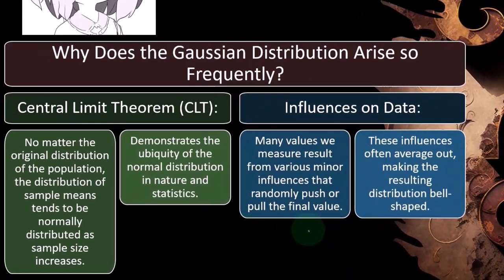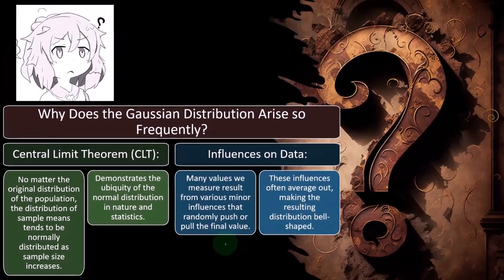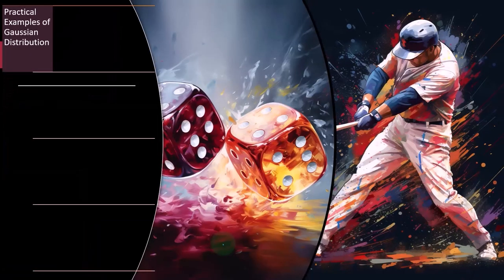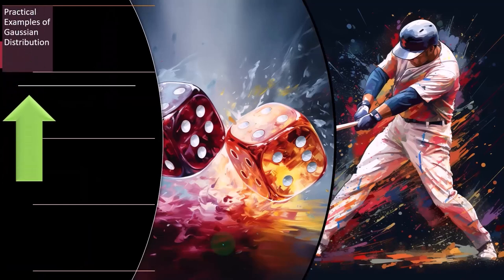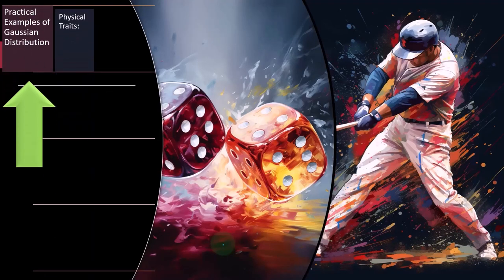So these influences often average out, making the resulting distribution bell-shaped. So let's take a look at some practical examples of the Gaussian distribution, bell-shaped curve, or normal distribution.